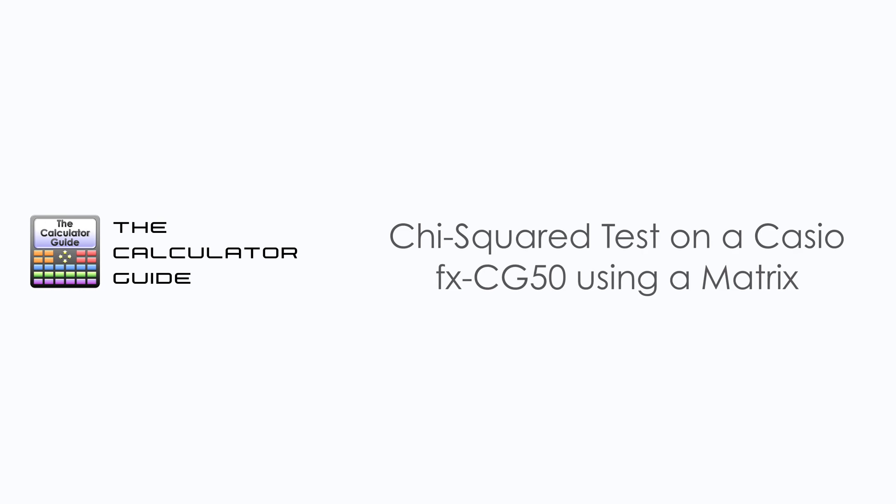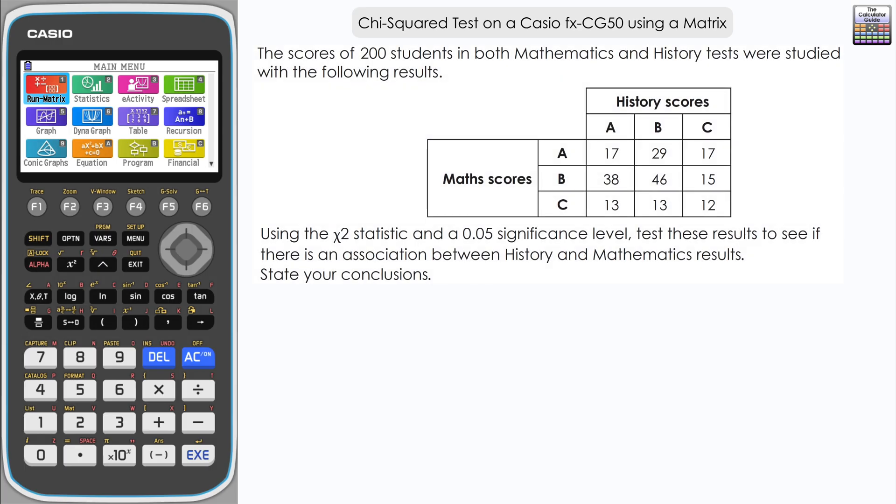Hello and welcome to the calculator guide video on chi-squared tests on a Casio FXCG50 using a matrix. Let's take a look at the question. The scores of 200 students in both mathematics and history tests were studied with the following results displayed in a contingency table which we are going to put into a matrix on the calculator.